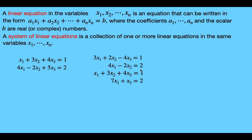Notice that this equation doesn't have an x sub 3 term, and that's okay. What that means is we just assume that the coefficient a sub 3 for the x sub 3 term is 0. Similarly, on this last equation, we see that there's no x sub 2 term, so we're assuming that the second coefficient in this equation is also 0.